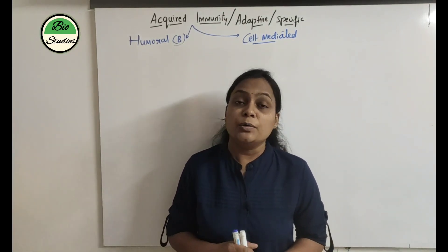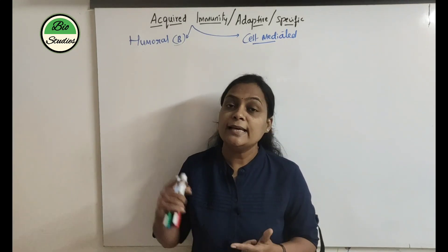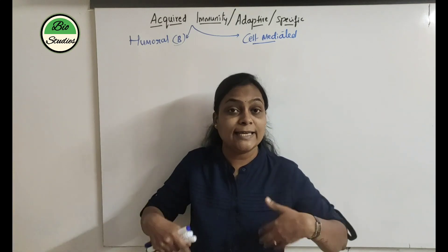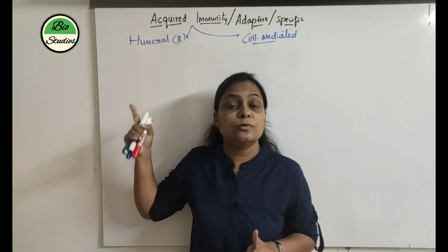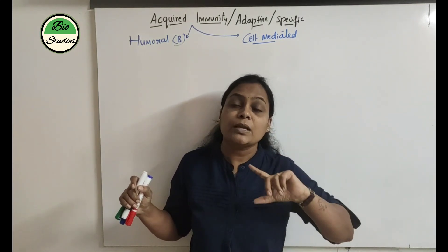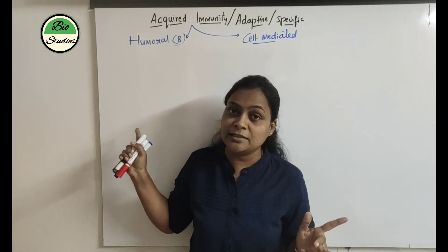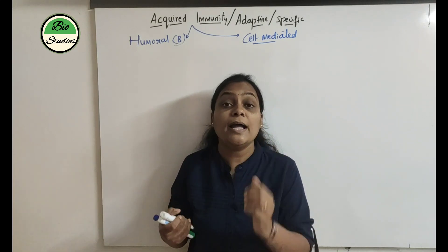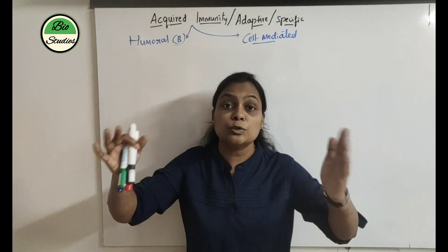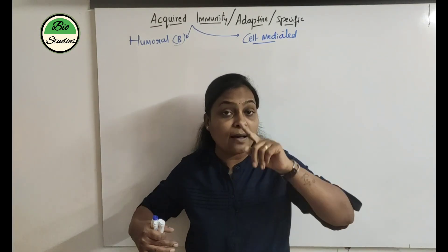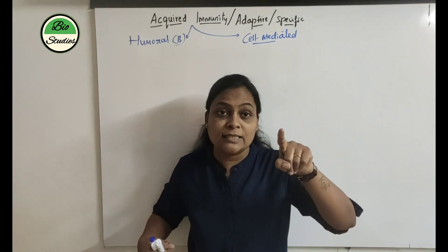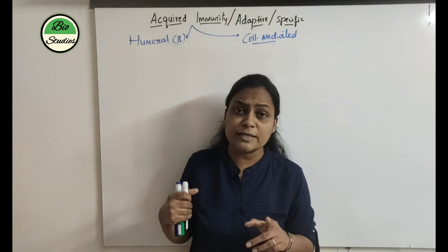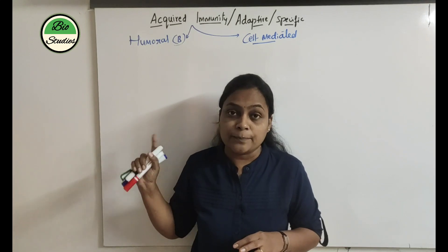Namaste and welcome to Bio Studies Human Health. This chapter covers Acquired Immunity. Acquired immunity, also called adaptive immunity or specific immunity, is gained over a lifetime. It is also called antibody-mediated immunity because antibodies are proteins produced to target antigens. Antibodies target pathogens on their surface and destroy them. Macrophages perform phagocytosis on pathogens. This is humoral immunity.